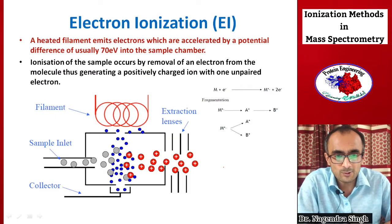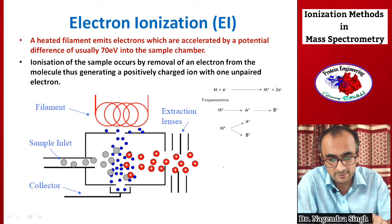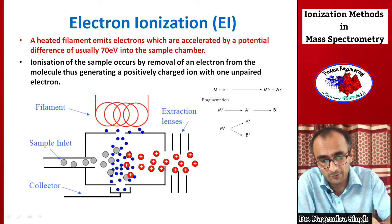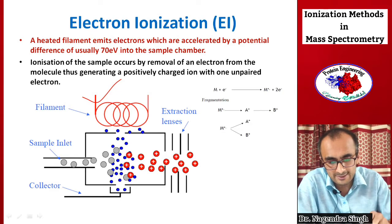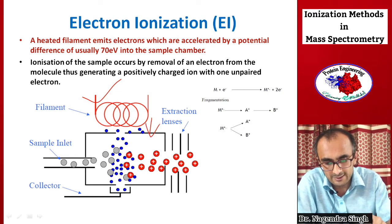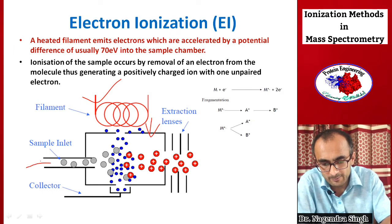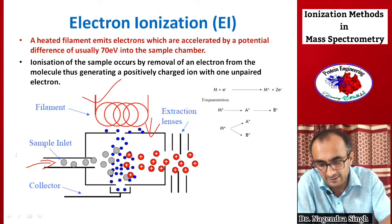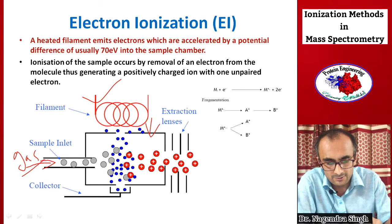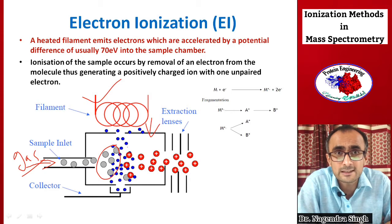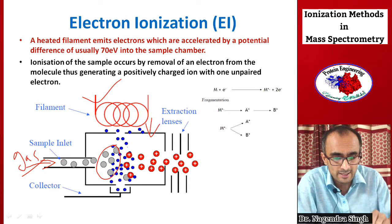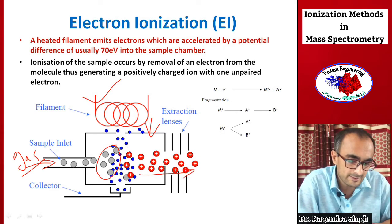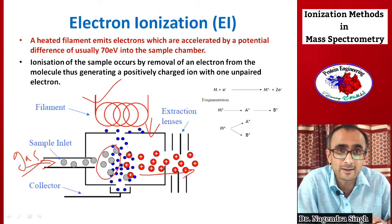In the electron impact ionization chamber, there is a filament that is electrically heated. This filament liberates electrons. The sample analyte enters in the gaseous or vapor state, and when the electrons collide with the sample, they knock off electrons from it. As a result, molecular cations are formed, and these positively charged ions are then accelerated into the analyzer and detected.